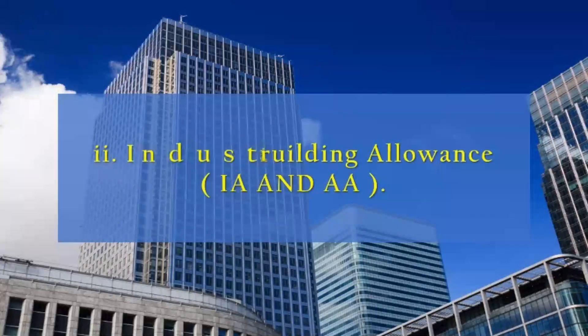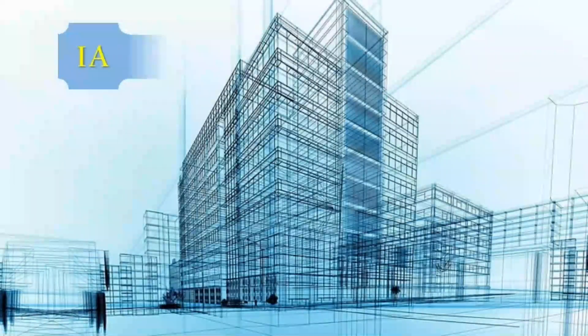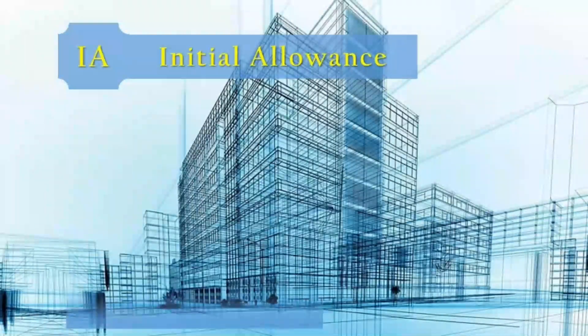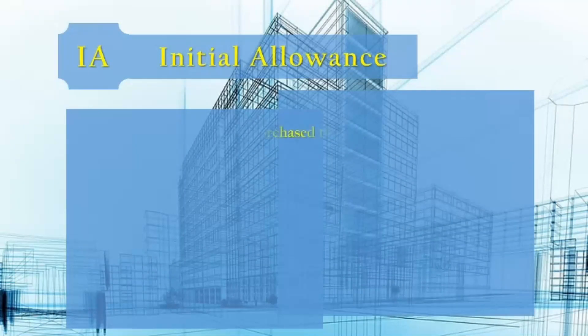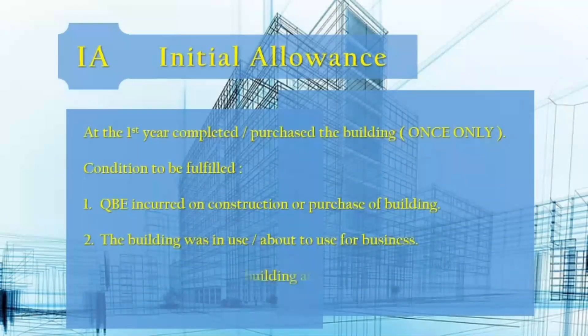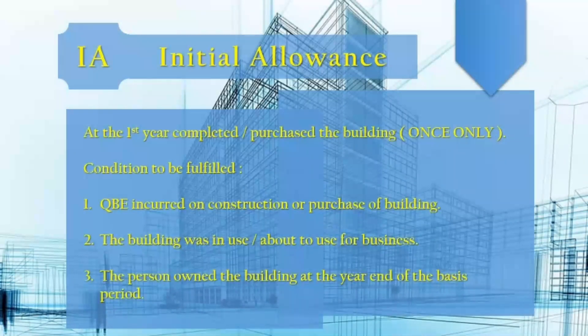Industrial Building Allowance (IBA): Initial Allowance (IA) and Annual Allowance (AA). Initial Allowance is claimed in the first year the building is completed or purchased, once only. Conditions to be fulfilled: QBE must be incurred on construction or purchase of the building; the building was in use or about to be used for business; and the person owned the building at the year end of the basis period.